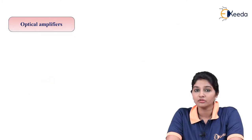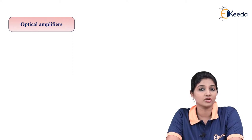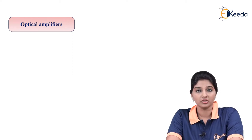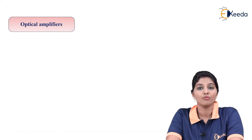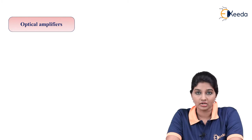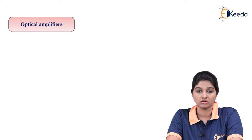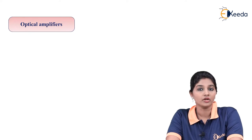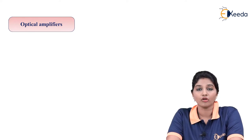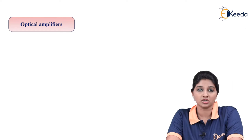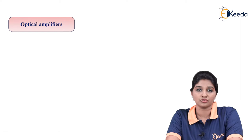Amplifiers — we know that in case of electronic circuits, amplifiers are basically used for improving the strength of the signal. Similarly, the concept is applicable to optical signals also. When the light signal travels a longer distance, due to environmental effects, various losses occur during the transmission of the signal. So in order to overcome it, we require to amplify or regenerate the signal at particular intervals. For that purpose, optical amplifiers are used.